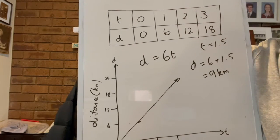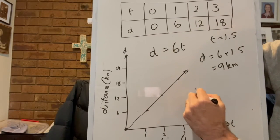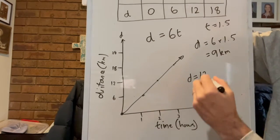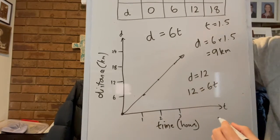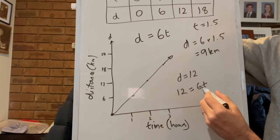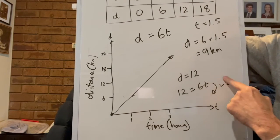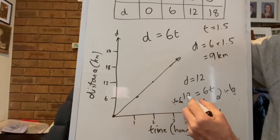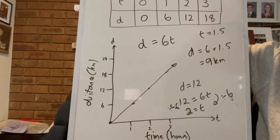And then the final question says, well what if d is 12? So d equals 12. So then we can put d equals 12 as the start equals 6t. And then we can work from that. So to get rid of the six here we would divide by six, and on this side we would divide by six as well. 12 divided by six, so two equals t. So the time would be two hours.